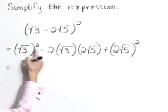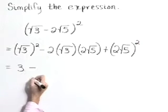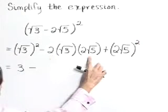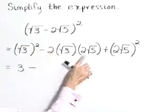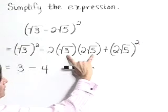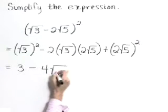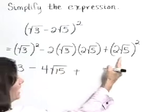Let's clean up these pieces. (√3)² is 3 minus, multiplying here with our middle term, multiply what's outside the radicals: 2 times 2 is 4, and then what's inside the radicals. So we'll have times √15 plus our last term.